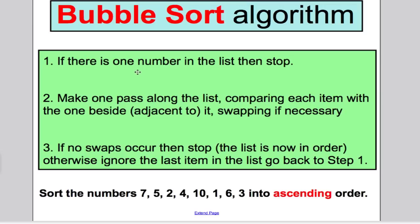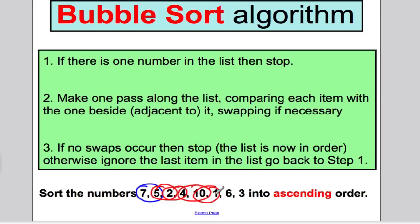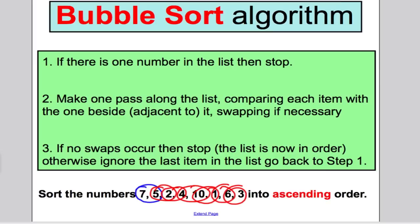This is how the process goes. If you've got one number in your list, you stop — it's in order because it's one number. If not, you make one pass along the list. In this pass you compare each item with the one beside it and make a swap if you need. You continue comparing until you get to the end — that's called a pass. If during that pass no swaps occur, you stop because your list must be in order. Otherwise, you ignore the last item which has been pushed to the back, and you go back to step one and make another pass through the list.